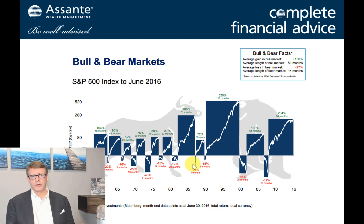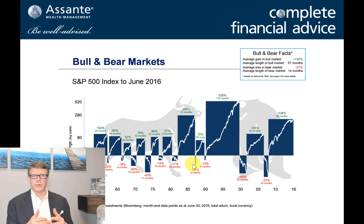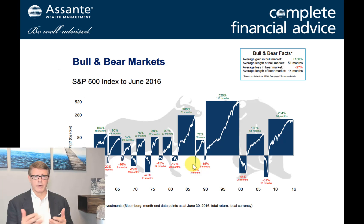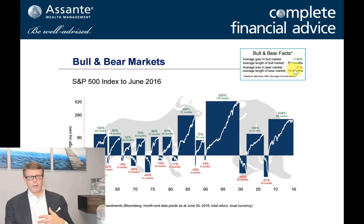We had a lot of clients wanting to sell their mutual funds and buy GICs, as GIC rates were fairly attractive. And yet, as I'll show you in another chart, by the end of the year we were in positive territory, and the following year the market did very well — so people panicked unnecessarily. Generally speaking, if you look at these charts, the average gain in a bull market is about 156%, and the average length of a bull market is about 51 months. The average loss in a bear market is about 27%, and the average length is about 14 months — so far less loss than gain.